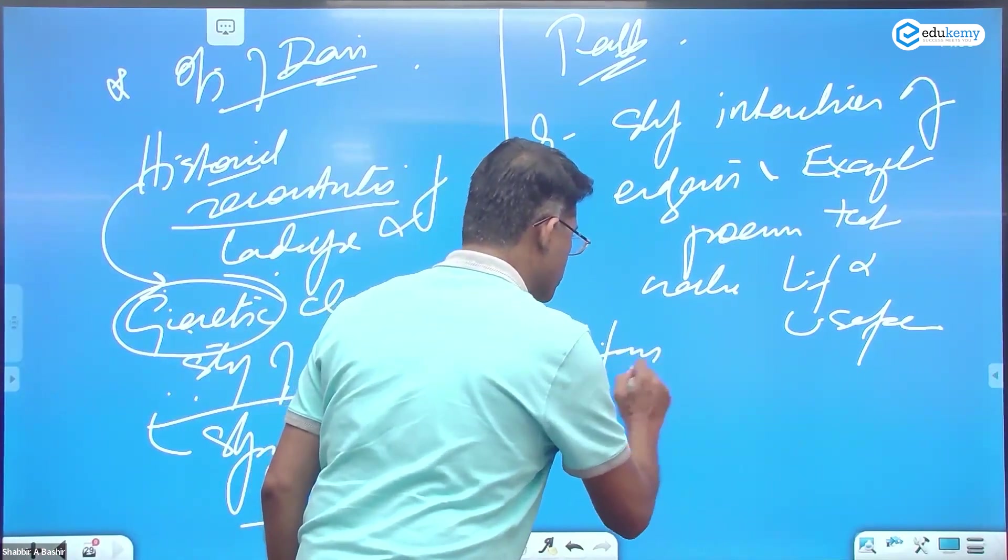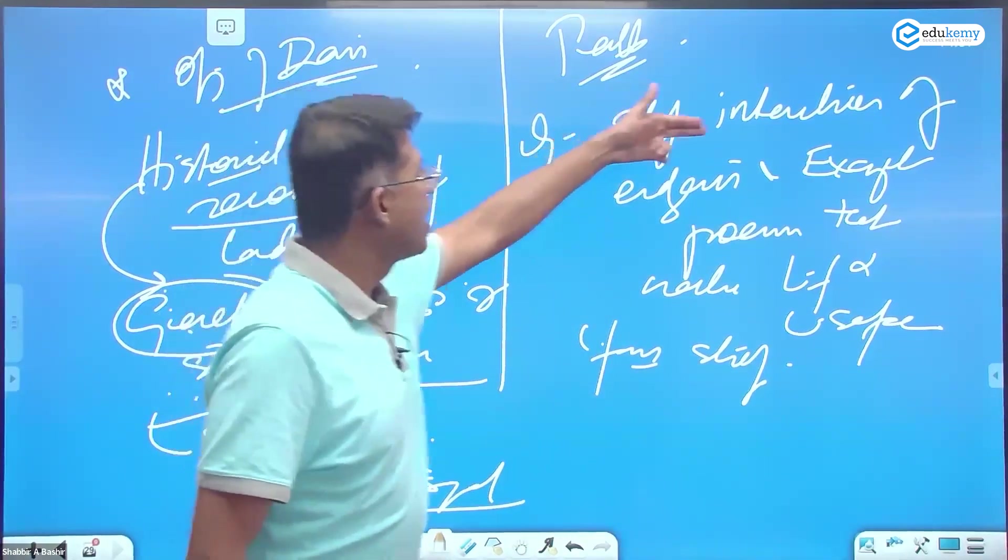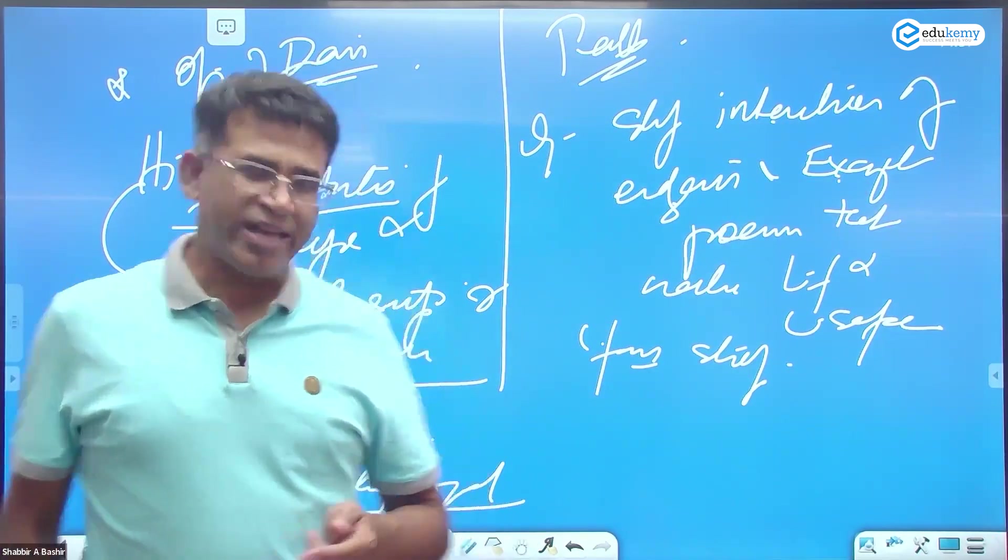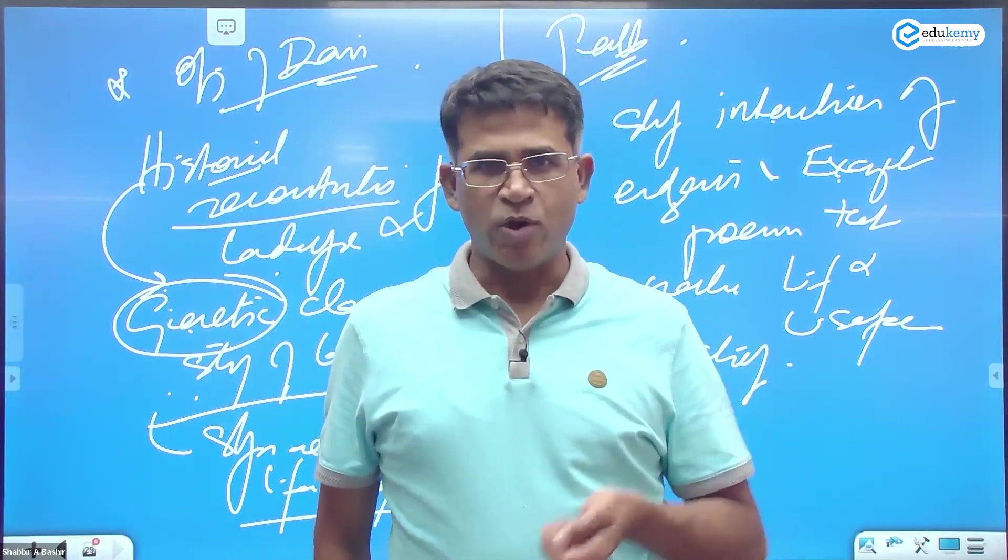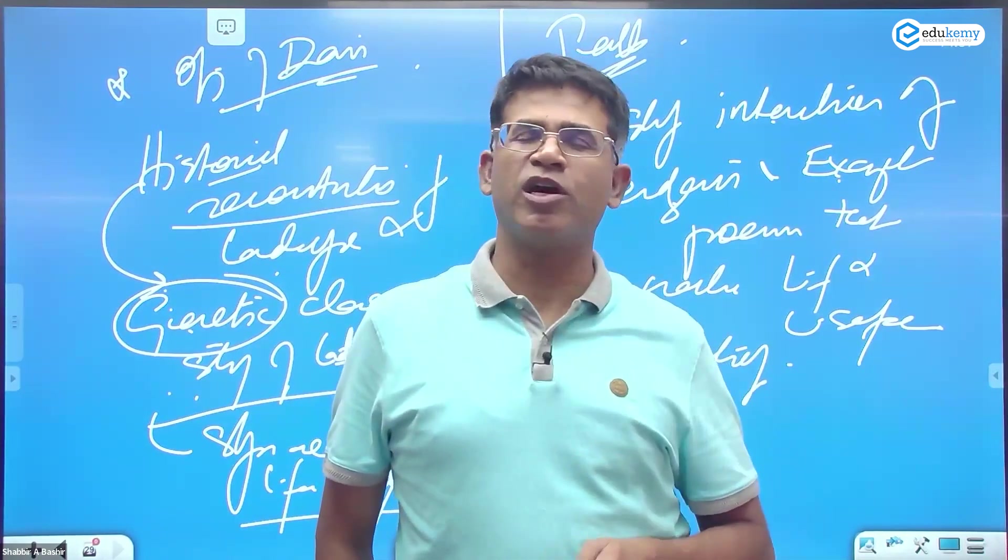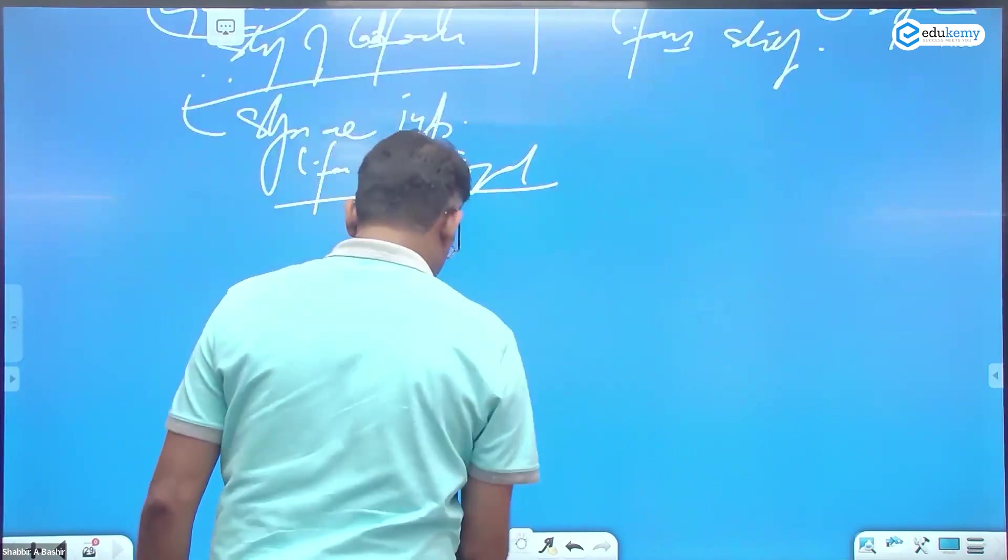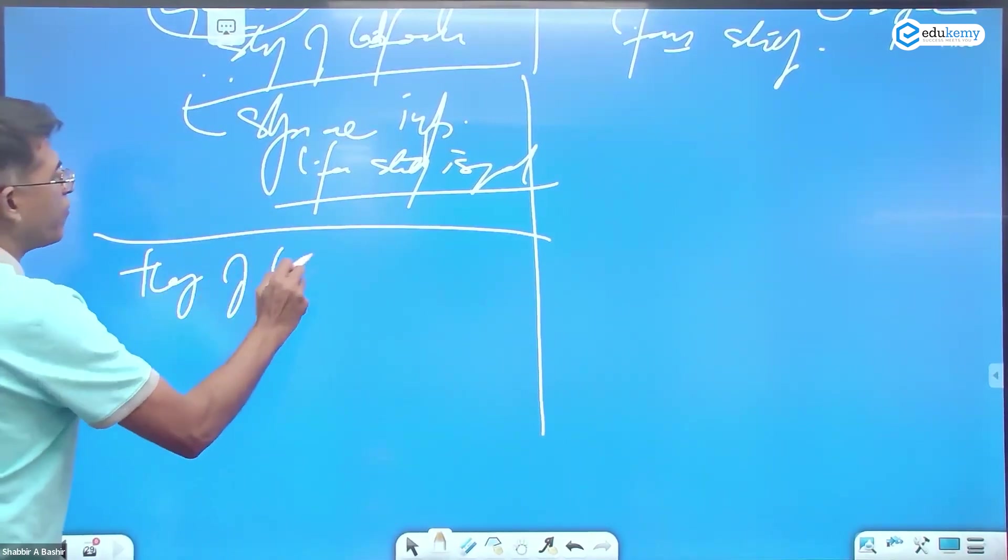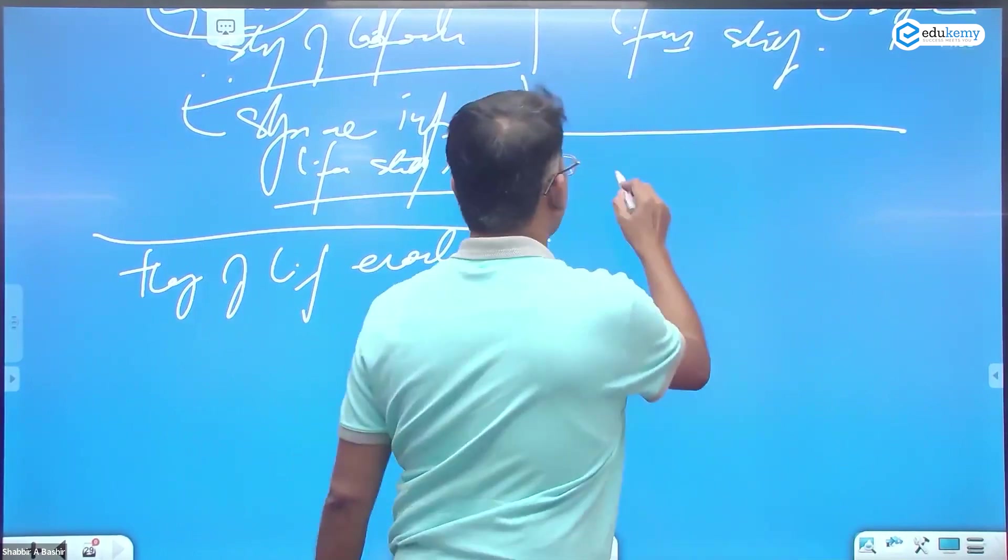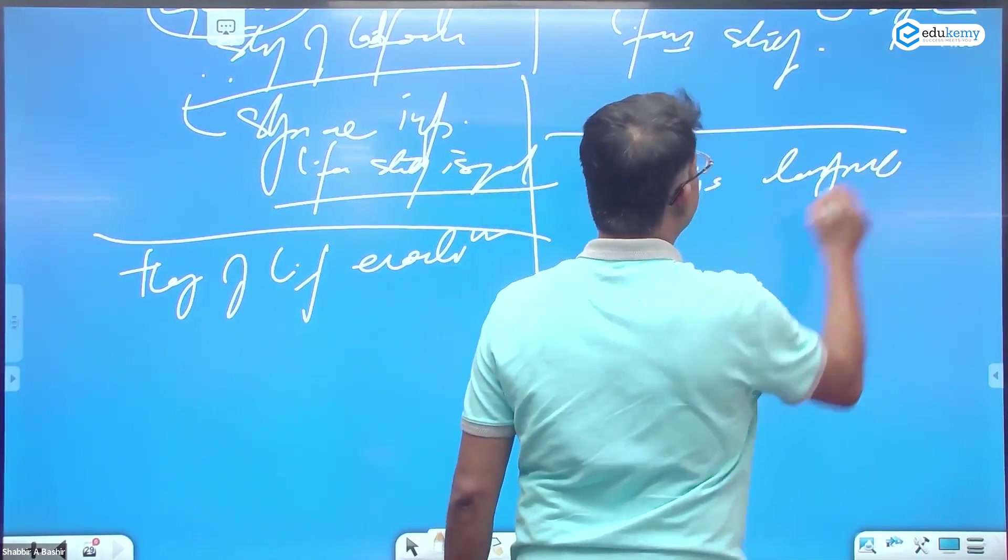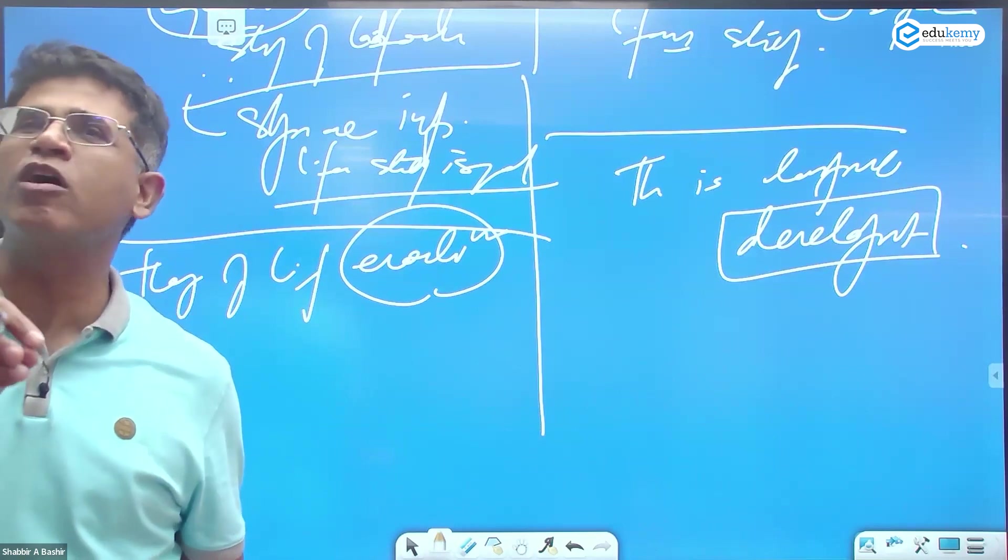This is the objective of Davis. Let me reconstruct how landforms were in the past. Historical reconstruction of landscape and the genetic classification. And I think I have explained what I mean by genetic - essentially time angle here. The youth is genetic in origin, mature is genetic. So time-based studies, the genetic classification of the study of landforms. Whereas if you look at Pank, his objective was to study the interaction of endogenic and exogenic processes.